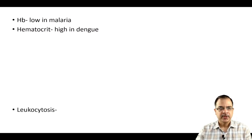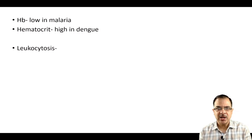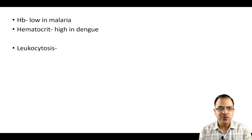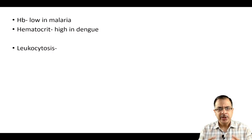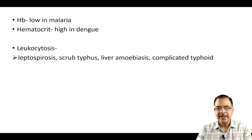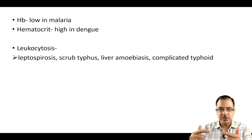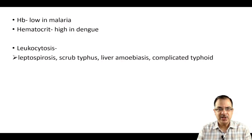Coming to the differential count and total leukocyte count — let's see what suspected disorders of fever can change the TLC and DLC. Leukocytosis means the TLC is increased; the usual range is 4000 to 10,000 per microliter. It is seen in cases of leptospirosis, scrub typhus, liver amoebiasis, and complicated typhoid.